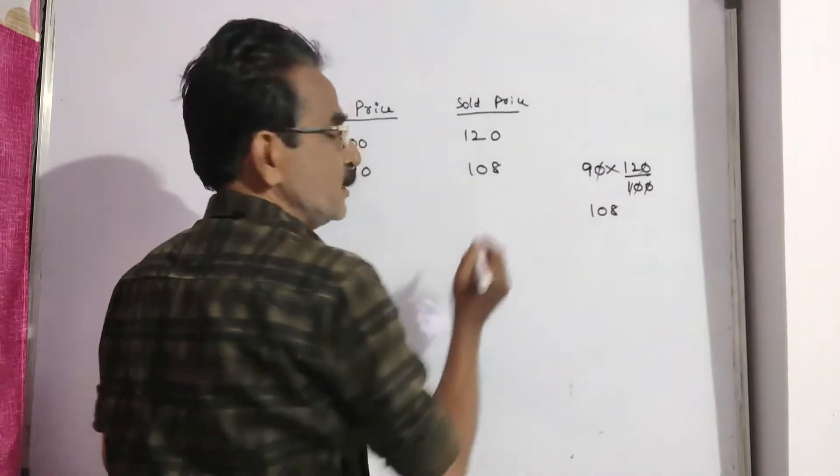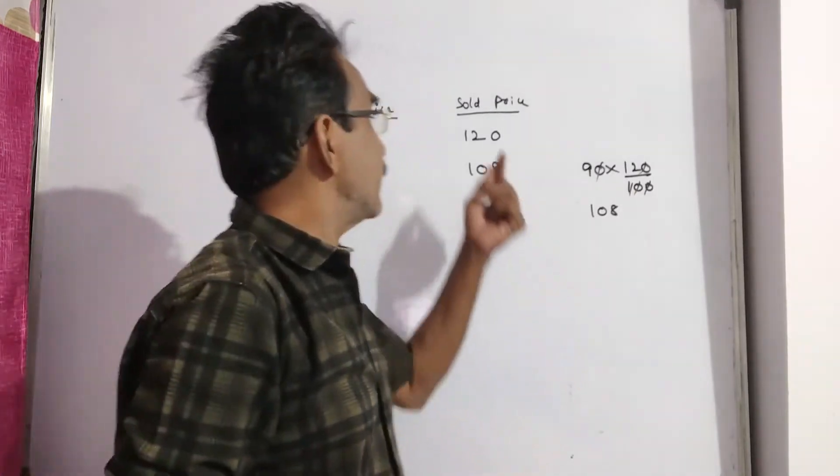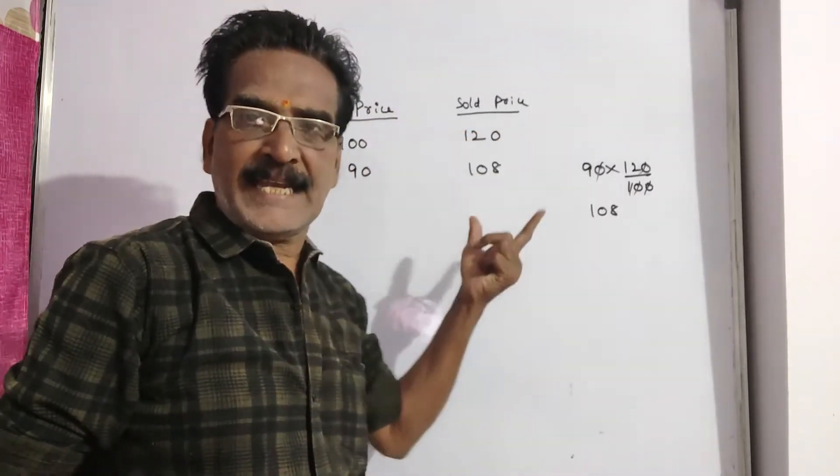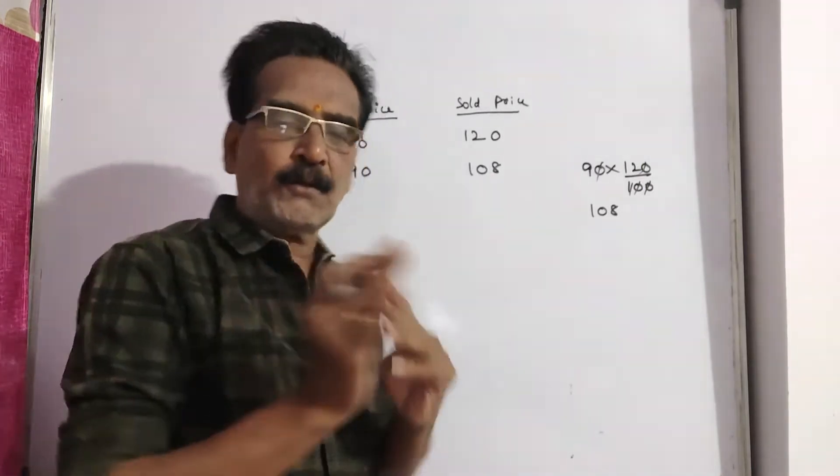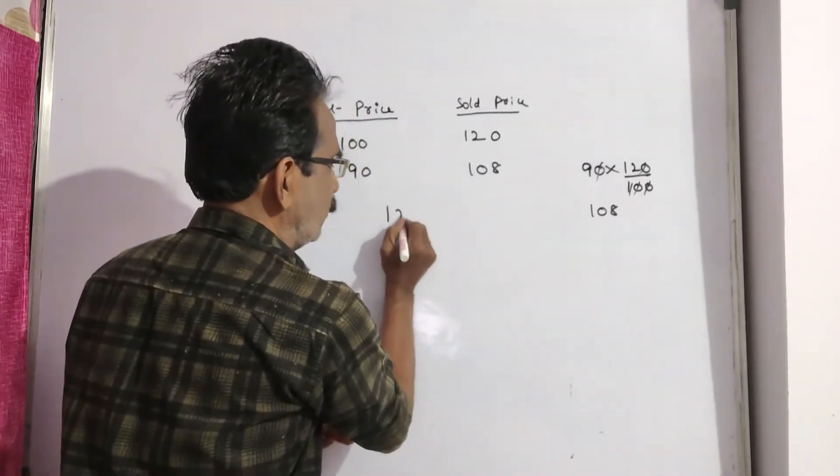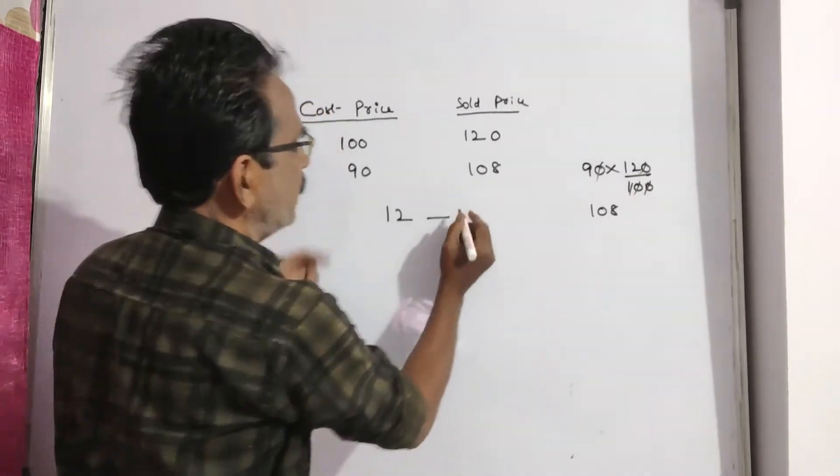So, this new sold price of 108 is 12 rupees less than the earlier sold price. So, if the new sold price is 12 rupees less than the earlier sold price, the cost price must be 100.